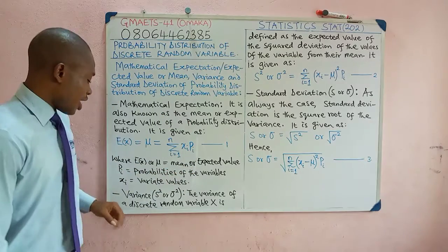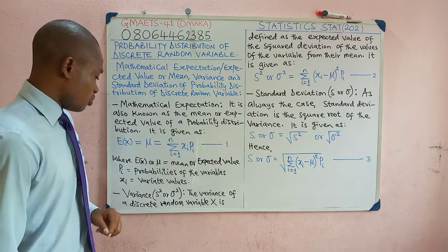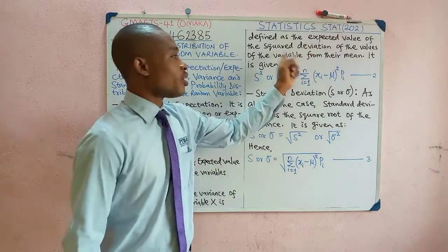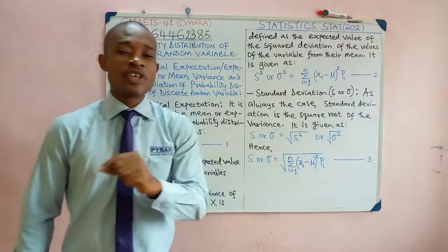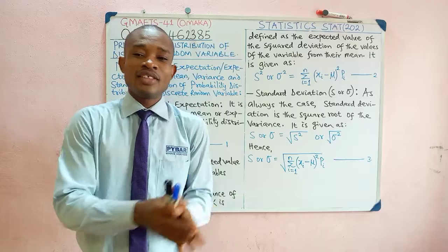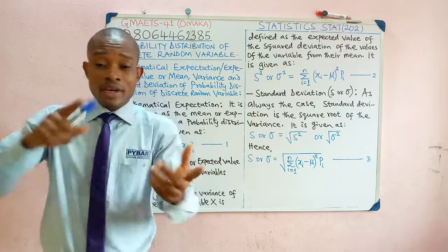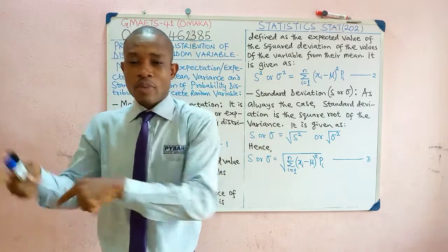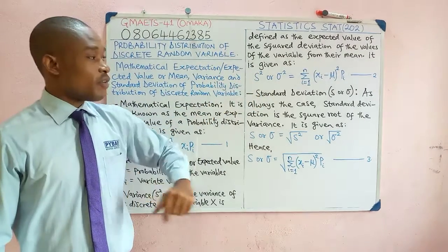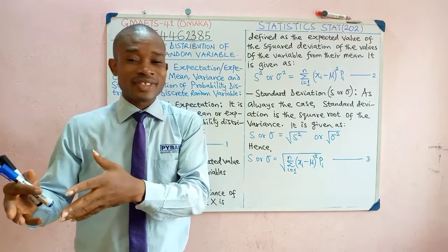We now want to look at variance — the variance of a probability distribution. It is defined as the expected value of the squared deviation of the values of the variable from their mean. Just like we have the square of the deviation of the variables from their mean under measures of dispersion, the same thing happens here.